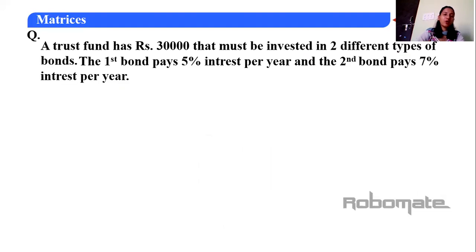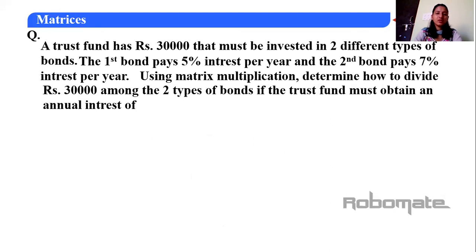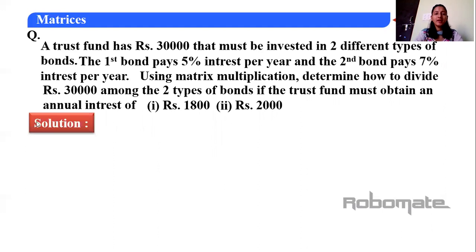Next question: A trust fund has Rs 30,000 that must be invested in two types of bonds. The first bond gives 5% interest per year, while the second bond pays 7% interest per year. Using matrix multiplication, determine how to divide Rs 30,000 among the two types of bonds so that the trust fund obtains an annual interest of Rs 1800 (first case) or Rs 2000 (second case).